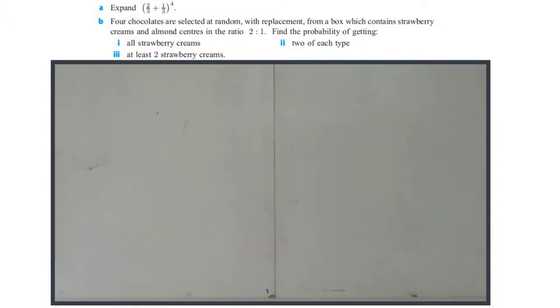Expand two-thirds plus one-third to the power of four. So it's a nice simple binomial expansion.